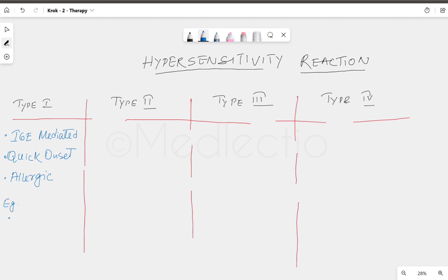First one is Type 1, which is called IgE-mediated hypersensitivity reaction, a quick-onset allergic reaction. Examples are bee sting, wasp bite, latex use, drugs like penicillin.